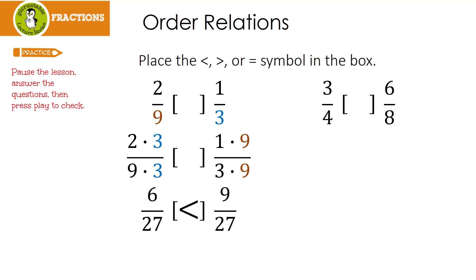Hopefully you see that 9 is bigger than 6. That means that 2 ninths is less than 1 third. Or the alligator is eating 1 third because the 9 way down here on the bottom is larger.